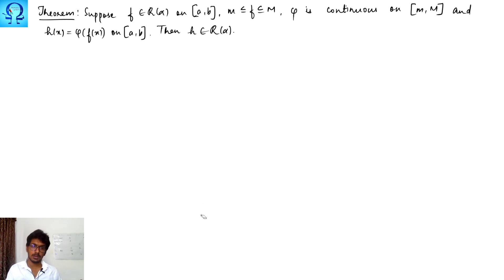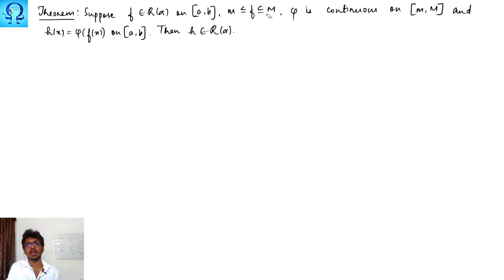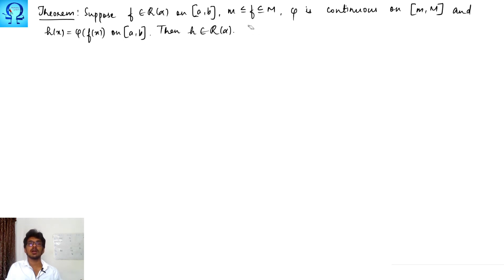Welcome back to a course on calculus and integration. In this lecture, we are going to see a theorem which states that if some function f is Riemann-Stieltjes integrable on a specified closed interval [a,b], and phi is continuous on the range of f, which is the interval [m, M], then the composition h = φ∘f is also Riemann-Stieltjes integrable.